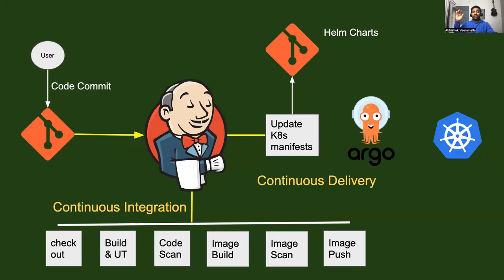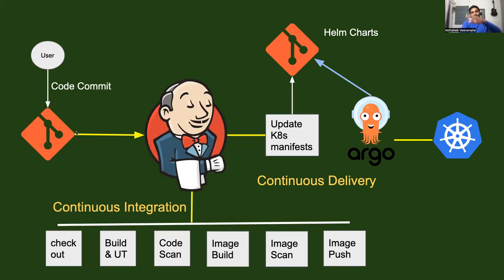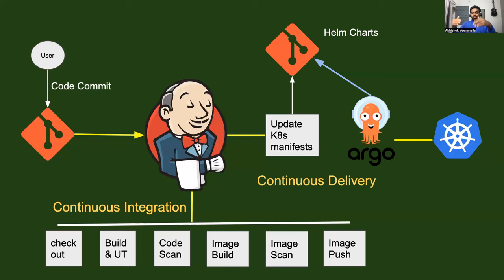Then you have the final stage where you use Argo CD or any GitOps tool such as Flux CD. It is better to go with the GitOps approach. Using Argo CD, you deploy the new change onto the Kubernetes platform. Argo CD continuously watches the Git repository — wherever you are pushing the updated Kubernetes YAML manifest — and you configure Argo CD to watch that Git repository and push changes to the Kubernetes cluster. The advantage of using GitOps is that Git is a single source of truth, and any changes made to the repository are automatically pulled and deployed to the Kubernetes cluster. It also has advantages like continuous reconciliation.